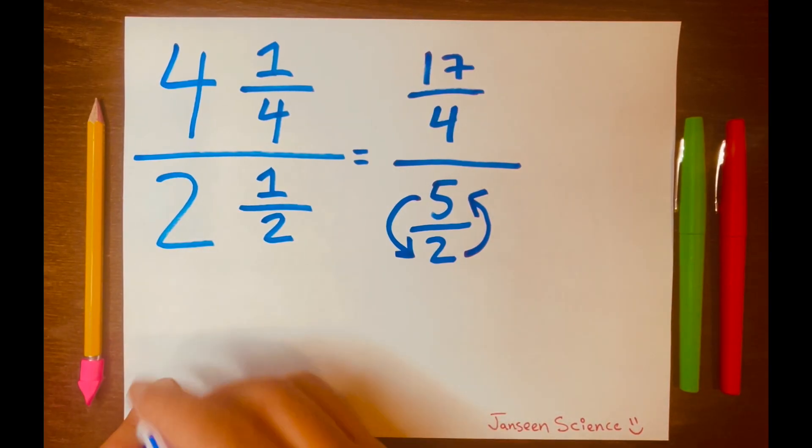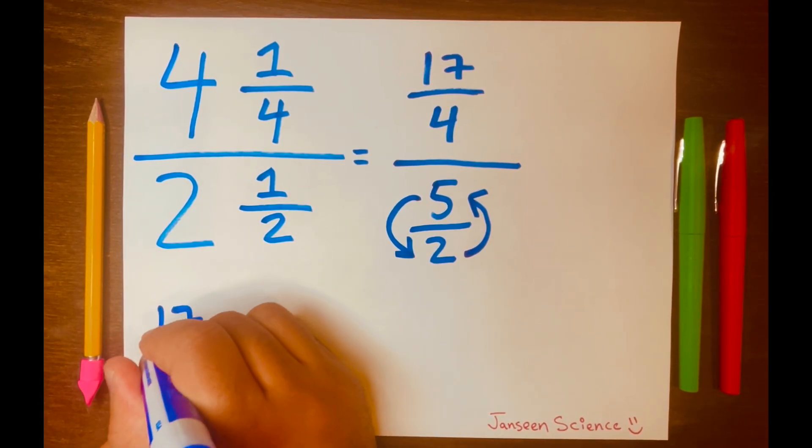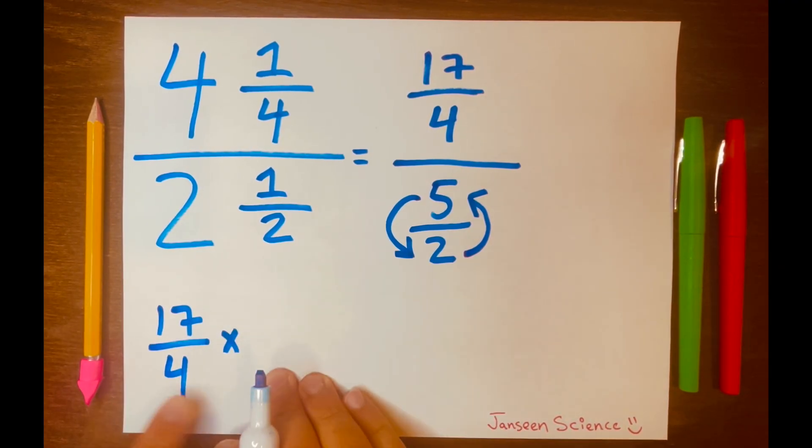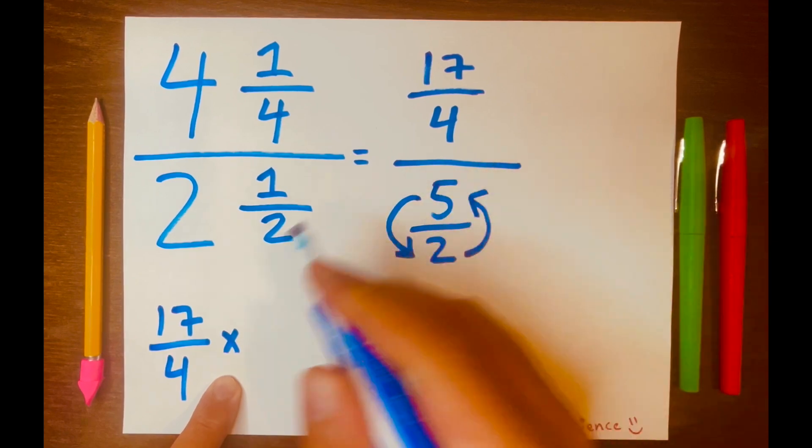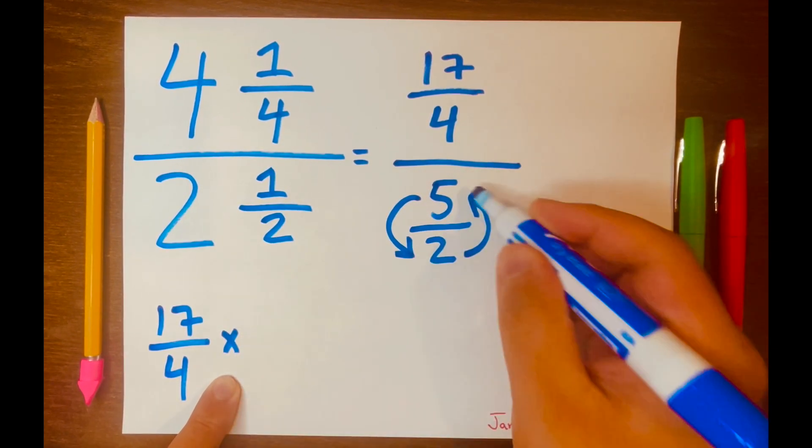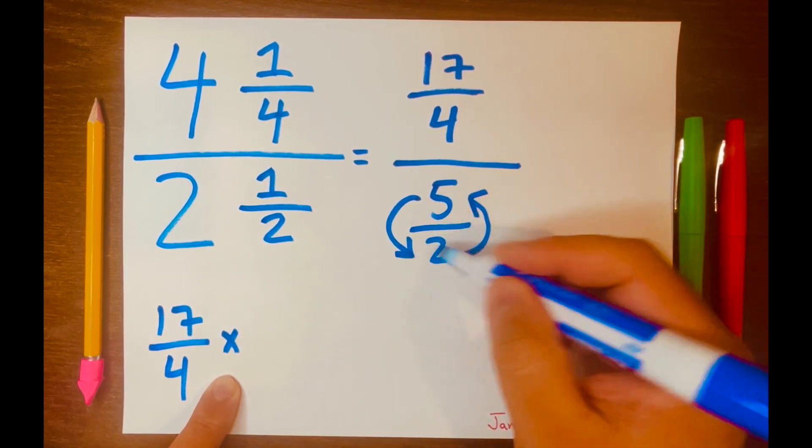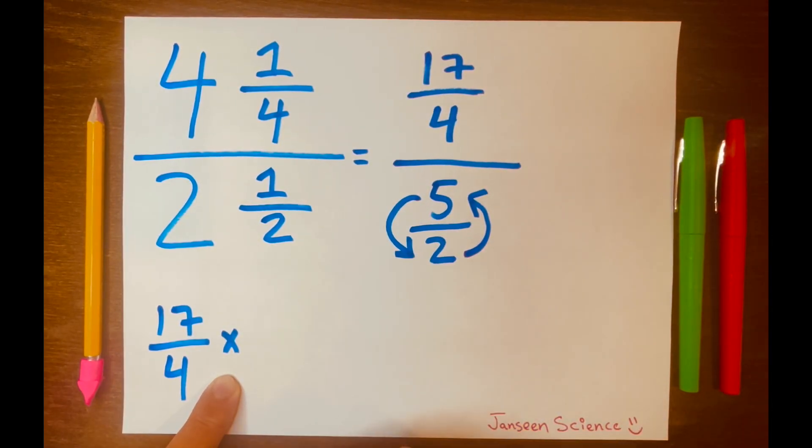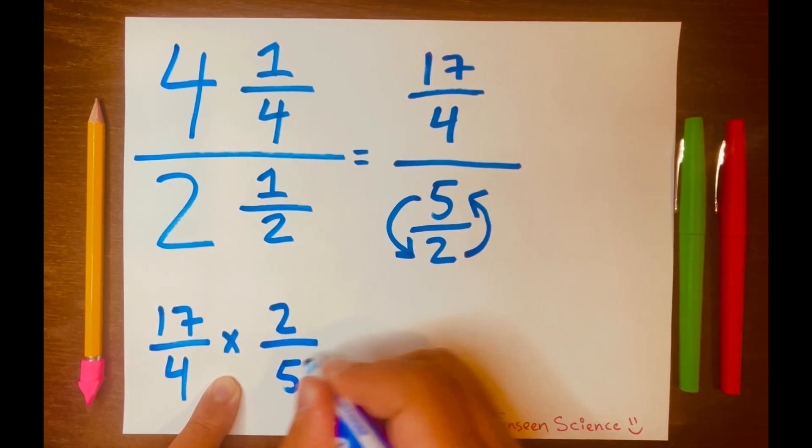So let me go ahead and write that down. 17 over 4 times, because we changed the division line to multiplication, and then we flip the last part of this fraction. 5 over 2 becomes 2 over 5.